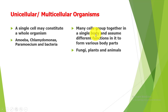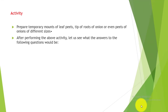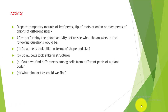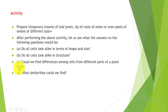We have developed another activity: preparing temporary mounts of a leaf peel, root tip, and onion peel of different sizes to observe cell structures. Through this activity we need to answer questions such as: do all cells look alike in terms of shape and size? Do all cells look alike in structure, or do we find differences among cells from different parts of a plant body, such as root tip or stem tip? And what similarities can we find?